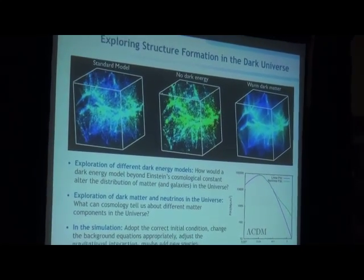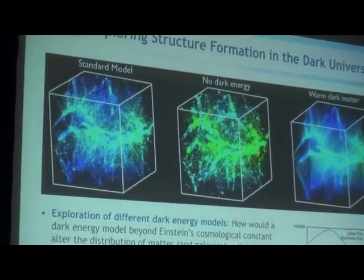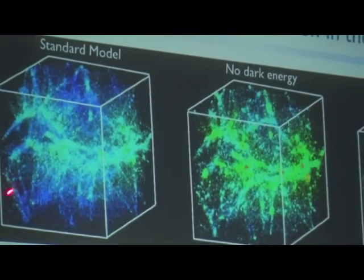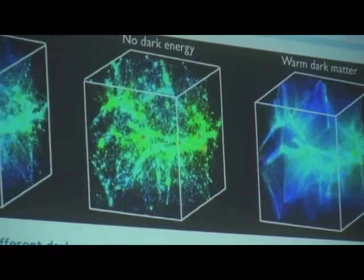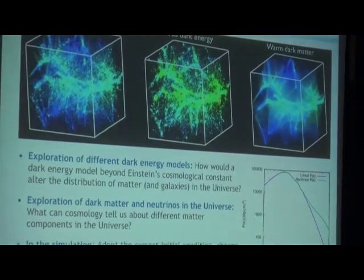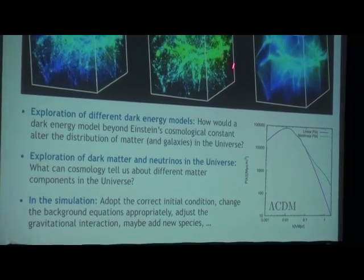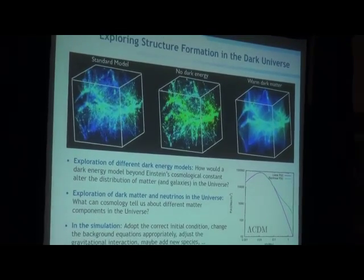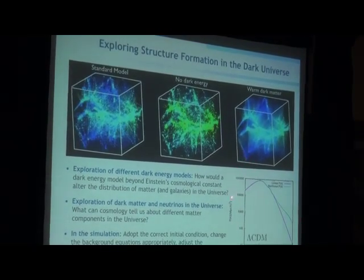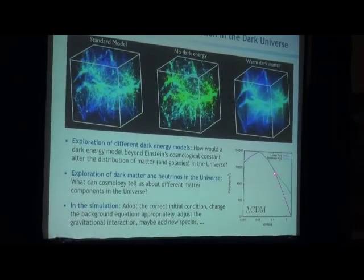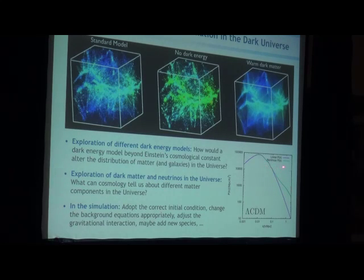Yesterday we talked about large-scale structure simulations, and this morning we heard a very nice talk by Will about the power spectrum. What you see here is the large-scale structure distribution — just the dark matter — for three different models. We took the same initial phases and simulated a Lambda-CDM model, a model with no dark energy, and a model with warm dark matter, and you can see the structures are quite different. That's what we want to tease out of the data. You can measure, for example, the power spectrum — here you see the linear power spectrum and the nonlinear power spectrum. There's a lot of information in the nonlinear part.